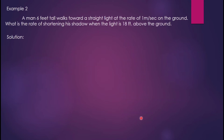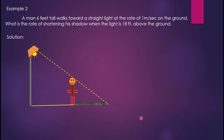Example two: a man six feet tall walks toward a street light at the rate of 1 meter per second on the ground. What is the rate of shortening of his shadow when the light is 18 feet above the ground? To illustrate, we have the street lamp and the man walking toward it, with his shadow shown.